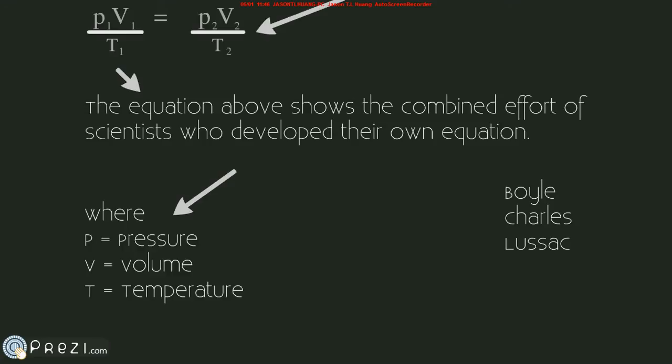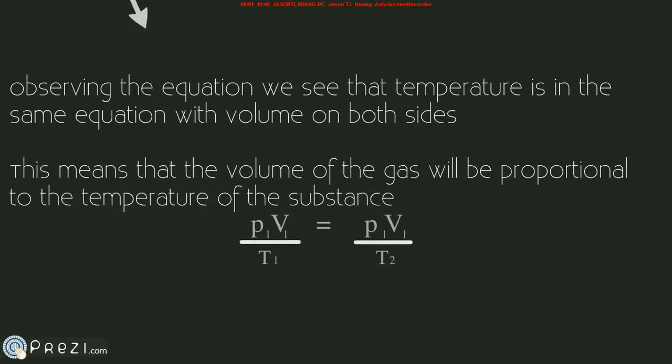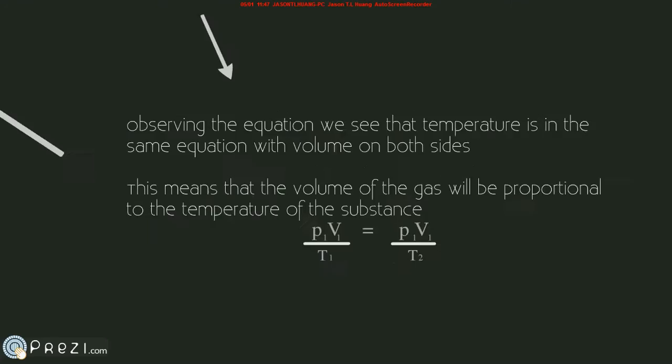It is a very simple equation. The terms for the variables are P for pressure, V for volume, and T for temperature. When we observe the equation, we can see that temperature is on the same side as volume on both sides of the equation. This means that the volume of the gas will be proportional with the temperature. Now that we know that, let's look back at sodium azide.